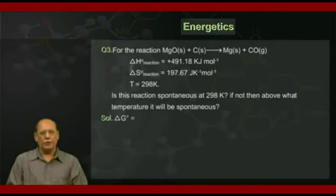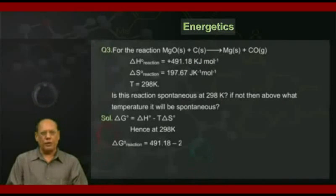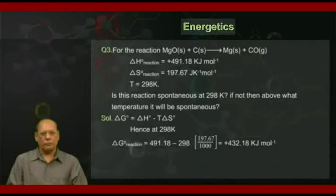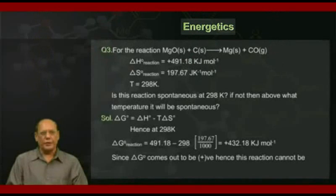Let us solve this question. Since ΔG° = ΔH° - TΔS°, hence at 298 K, ΔG° of the reaction equals, using the given data, 491.18 - 298×(197.67/1000), which amounts to +432.18 kJ/mol. Since ΔG° comes out to be positive, this reaction cannot be spontaneous at 298 K temperature.